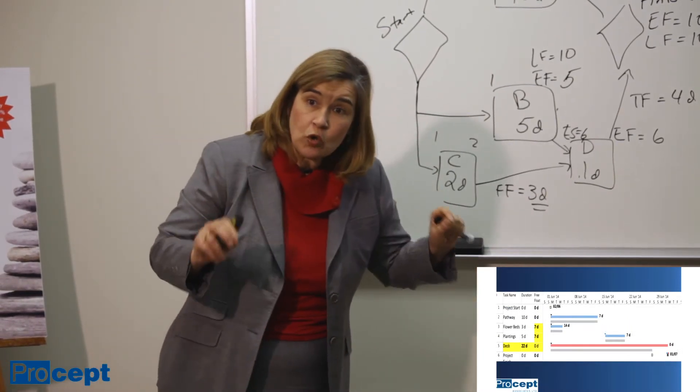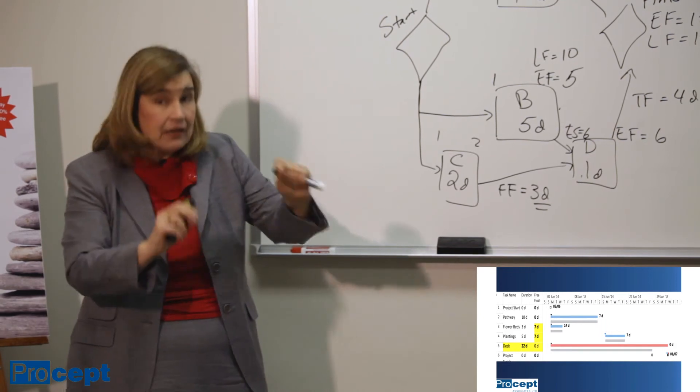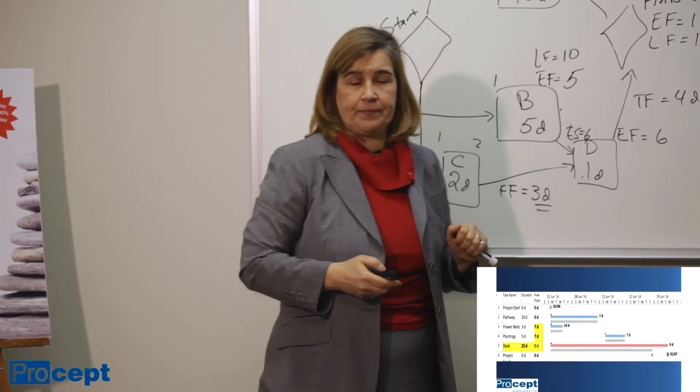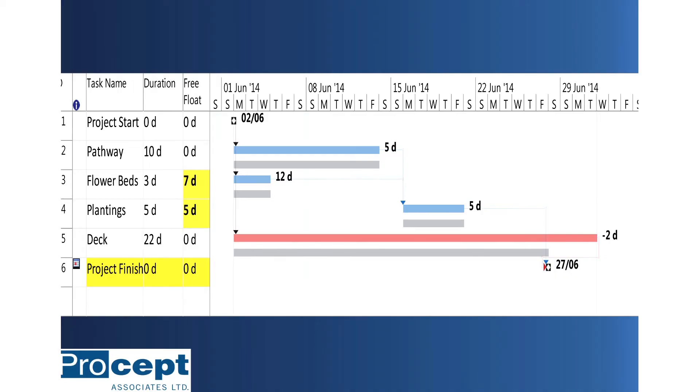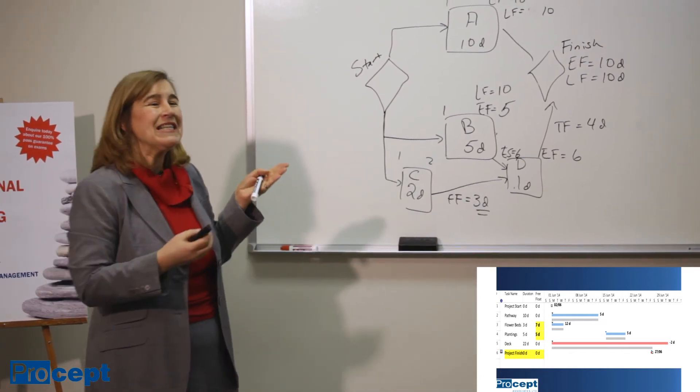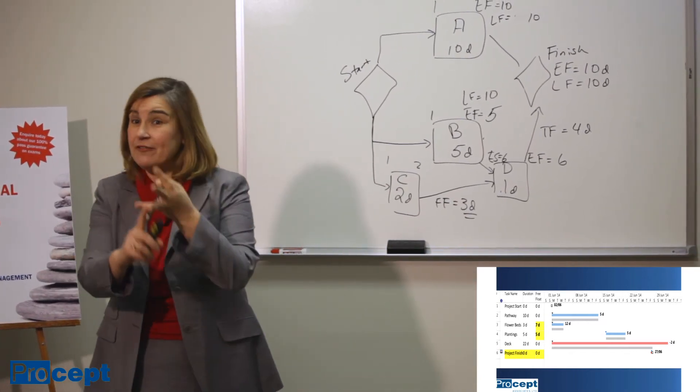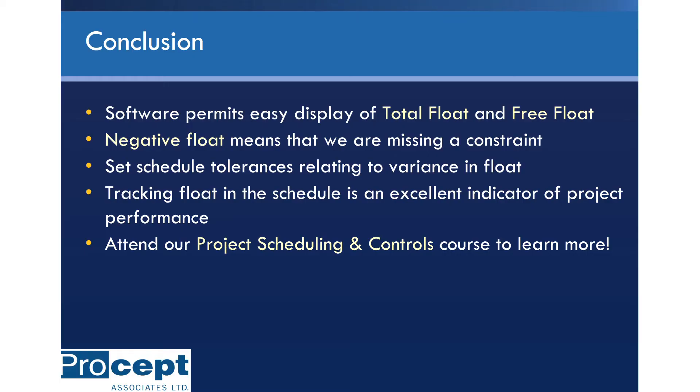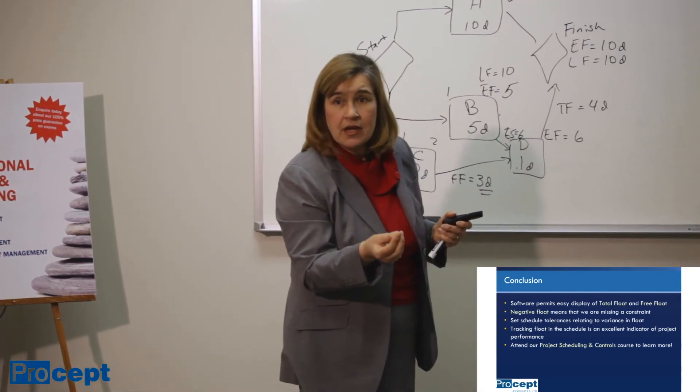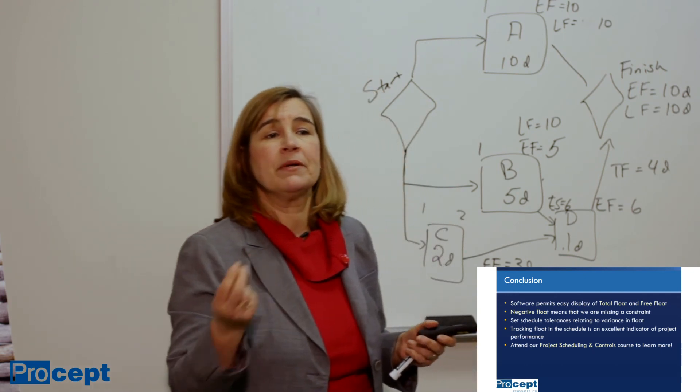Now, if our client told us that the finish date cannot slip beyond the 26th of June, then we tie that finish date with a constraint. And then, if deck slipped by the same amount, you would see that negative float on the schedule. So this is brilliant, because if you're using scheduling software, you can see total float and free float very quickly and very easily. And now there's this concept of negative float that shows up if you have constraints in your schedule, which acts as an early warning sign to project managers and schedulers to warn us when we are missing a potential deadline.